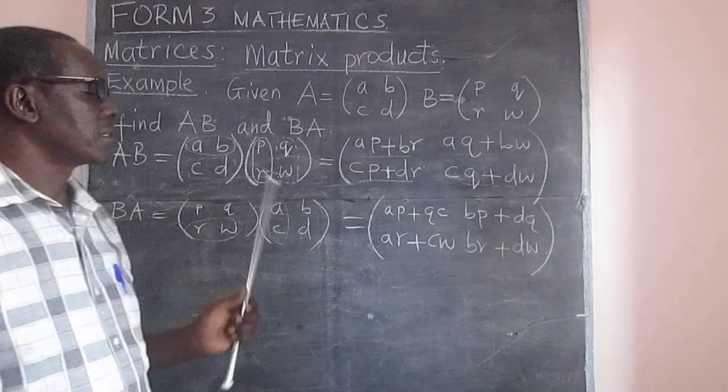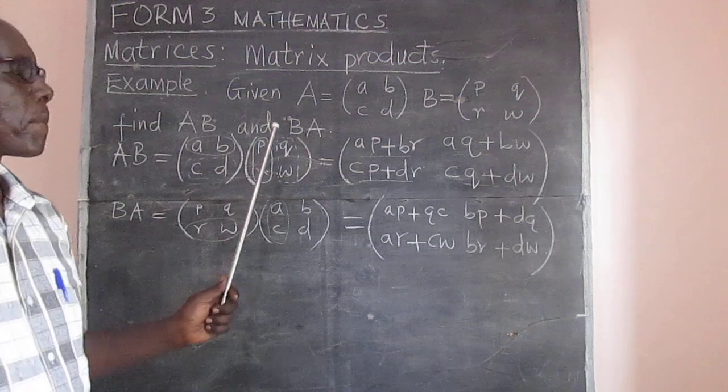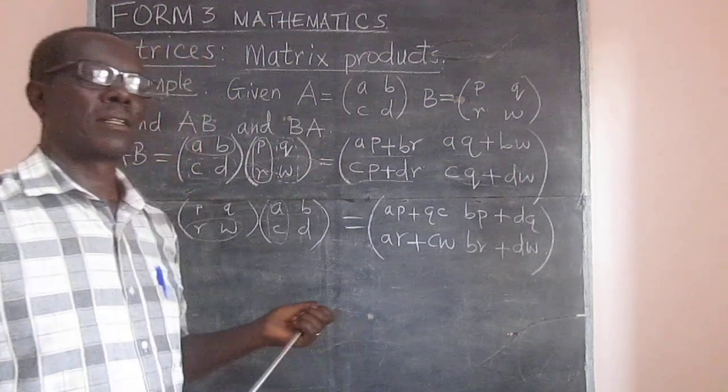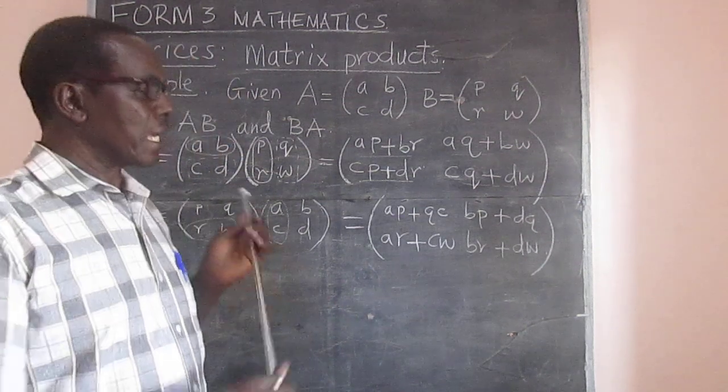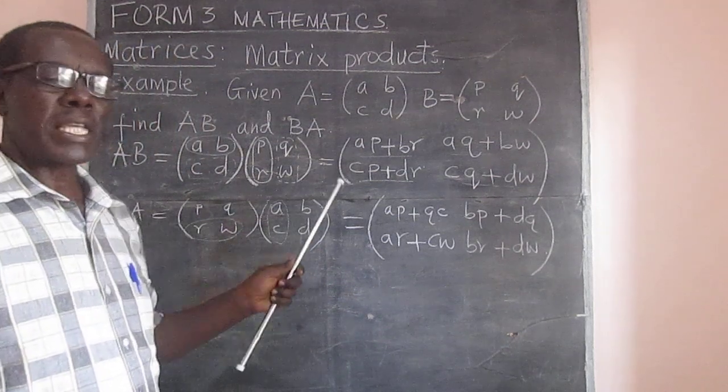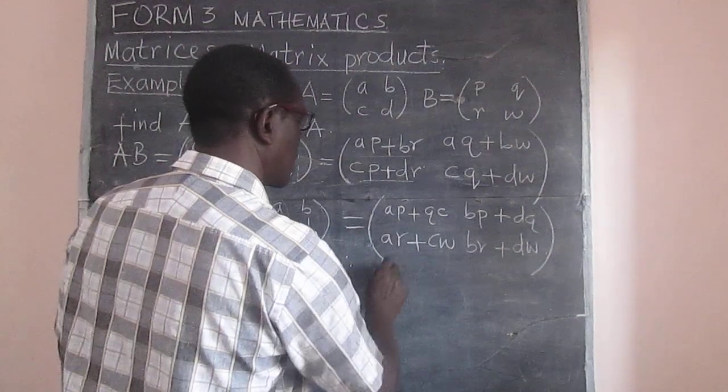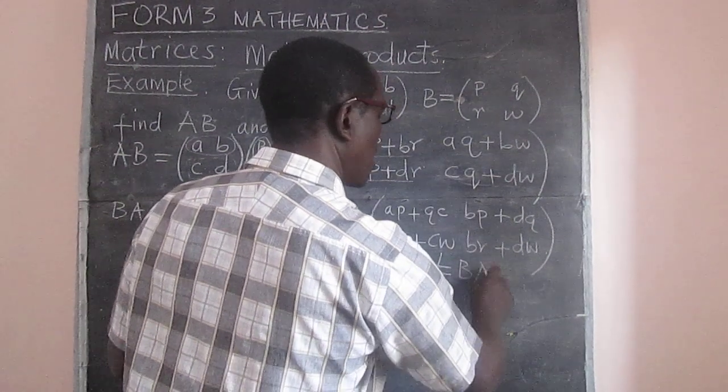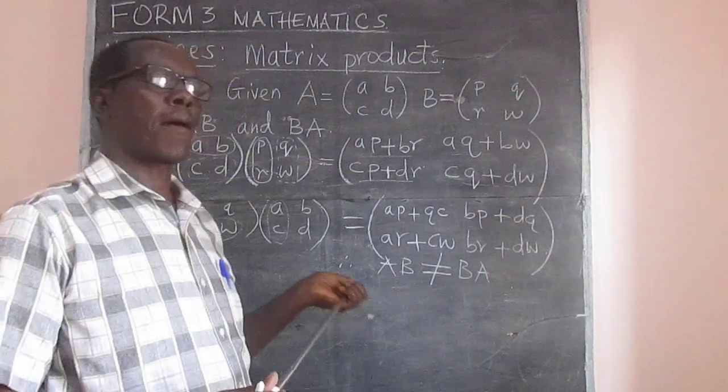So it is clear that when you interchange the matrices, the product becomes different. So in matrices, A times B is not equal to B times A. Therefore, we can conclude here, AB will not be equal to BA, as far as we are talking about matrices.